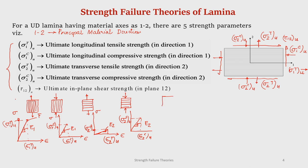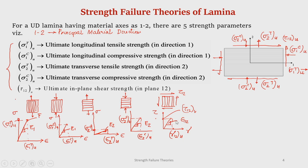Similarly, we can subject the lamina to in-plane shear tau_12, and the corresponding shear strength tau_12u can be obtained. The corresponding strain is gamma_12u and the slope is G12.